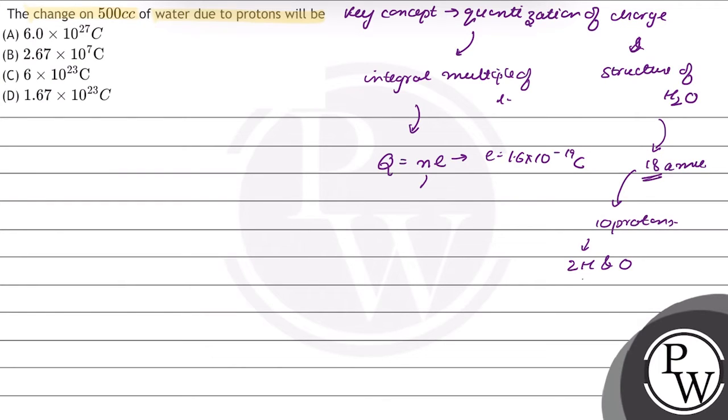2 hydrogen means 2 protons and 1 oxygen atom means 8 protons.